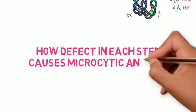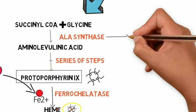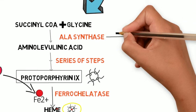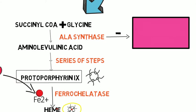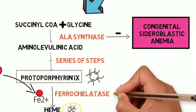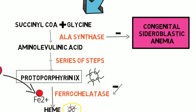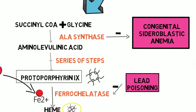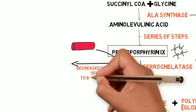Defects at each step cause microcytic anemia. When ALA synthase is decreased, congenital sideroblastic anemia results. Ferrochelatase is inhibited by lead poisoning. Decreased iron delivery to the bone marrow can be due to multiple causes.